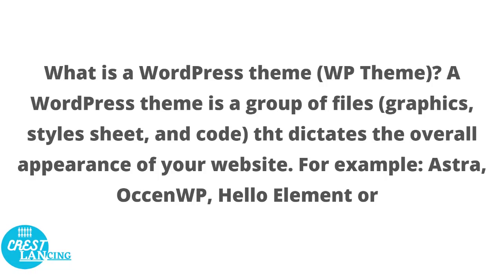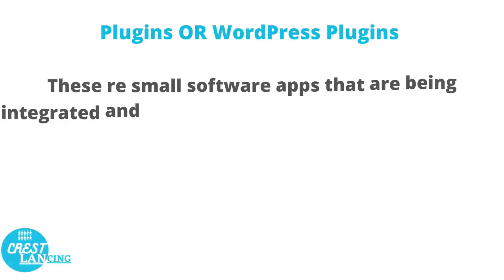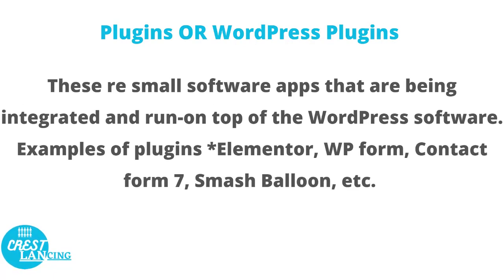What is a WordPress theme? A WordPress theme is a group of files that dictates the overall appearance of your website. Examples include the Astra theme and the Hello theme. WordPress plugins are small software apps that are integrated and run on top of the WordPress software. Examples of plugins include Elementor, WooCommerce, Contact Form, and others. Plugins are like apps on a smartphone — they are installed to add more functionality to your WordPress site depending on how you customize them.